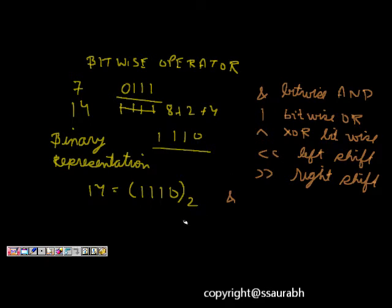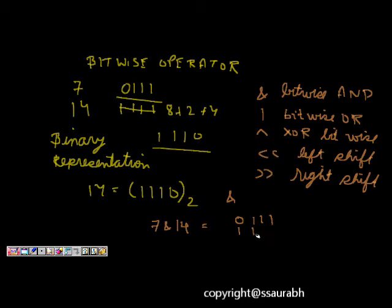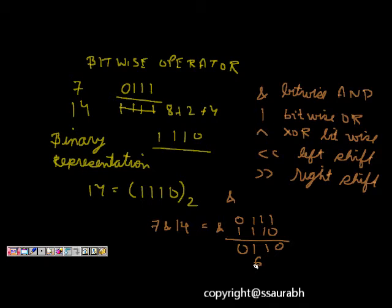Let's see the ampersand (AND) operation. If we do 7 & 14: 7 is 0111 and 14 is 1110. Performing bitwise AND gives us 0110, which is 2 + 4 = 6. So the value of 7 & 14 is 6.